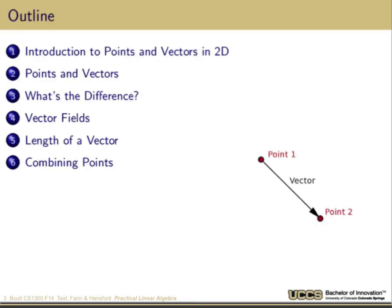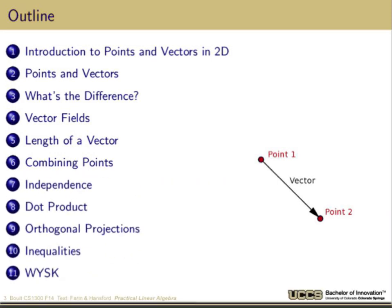Today's overview: we're going to look at the introduction to points and vectors in 2D and what the differences are between them. We'll look at how to combine vectors into vector fields, talk about properties like length of a vector, combining vectors, and combining points. We'll then look at broader issues after the intermission: independence, dot products, orthogonal projections, inequalities, and what you should know.